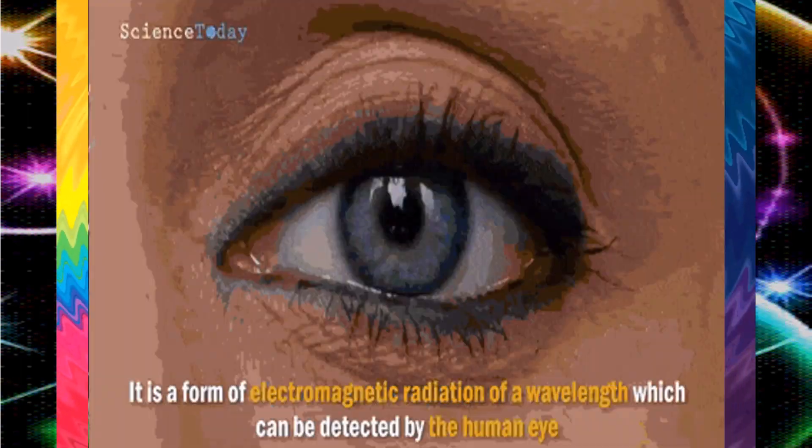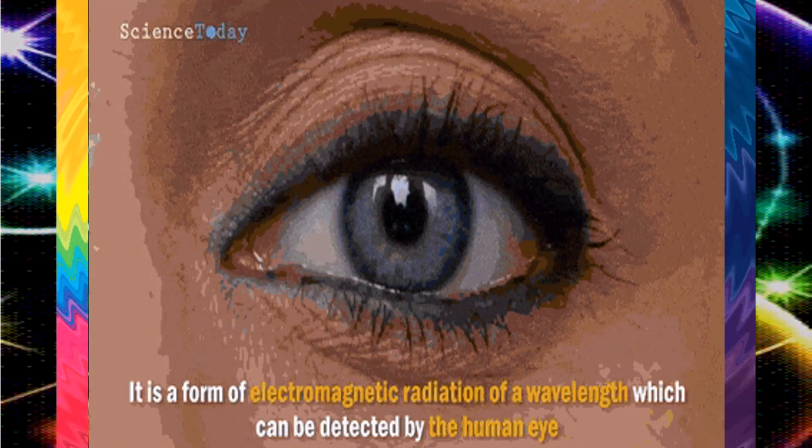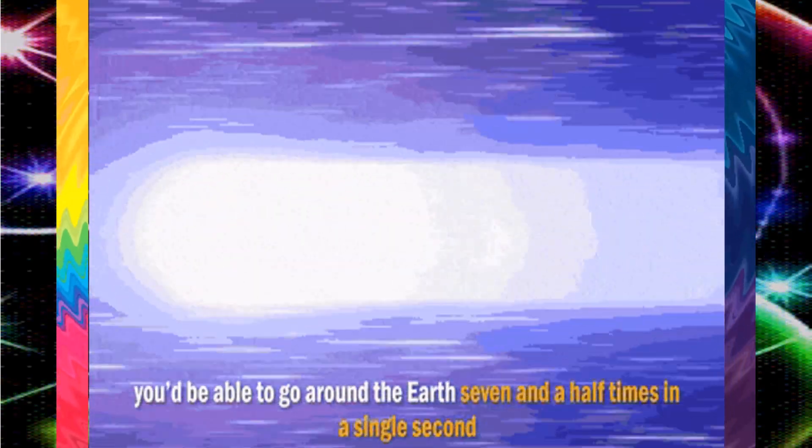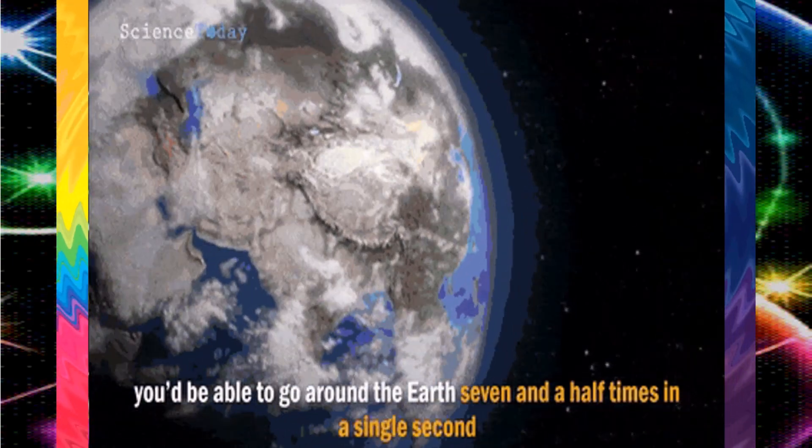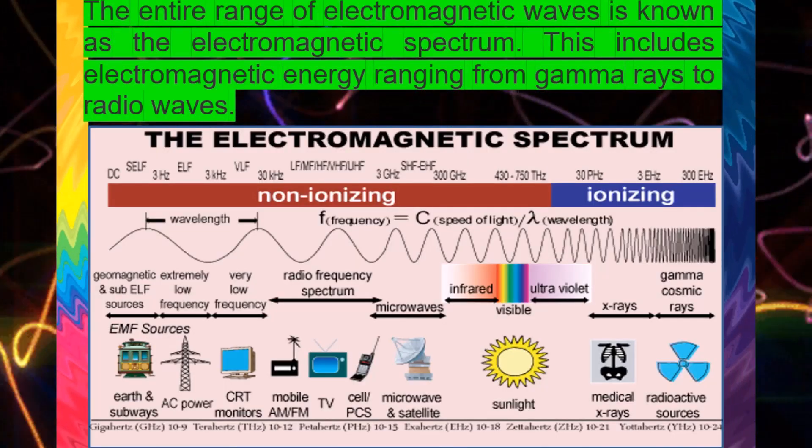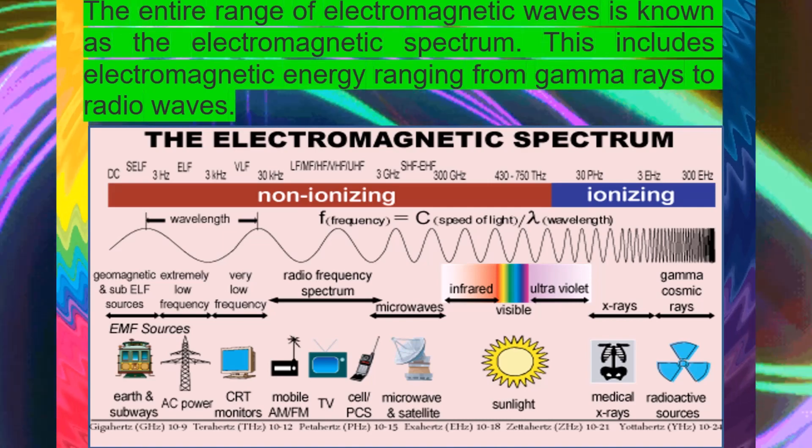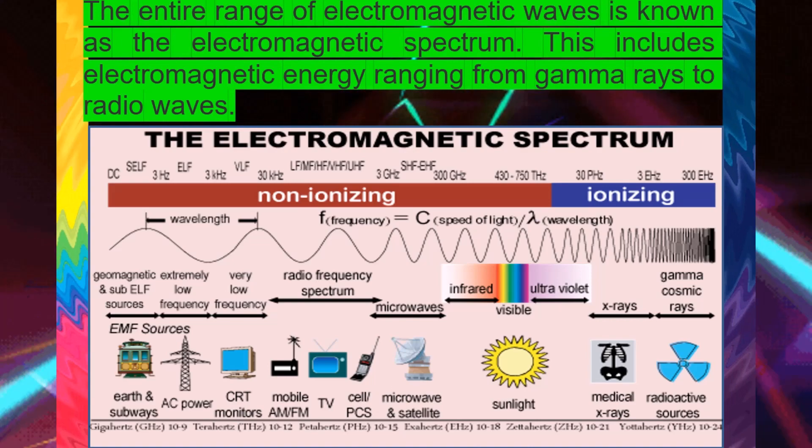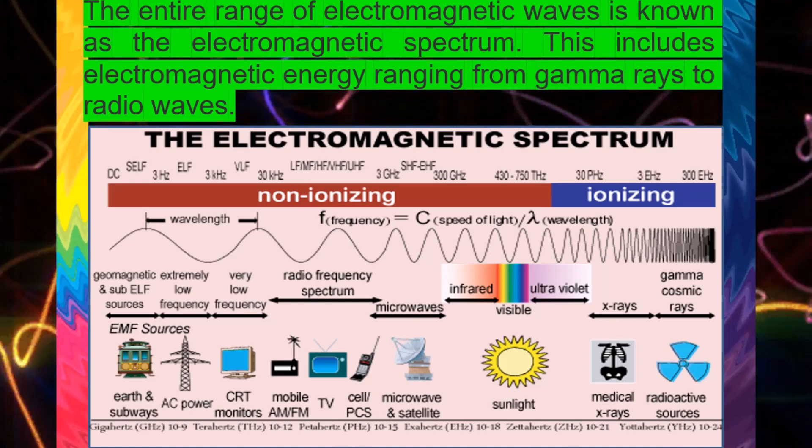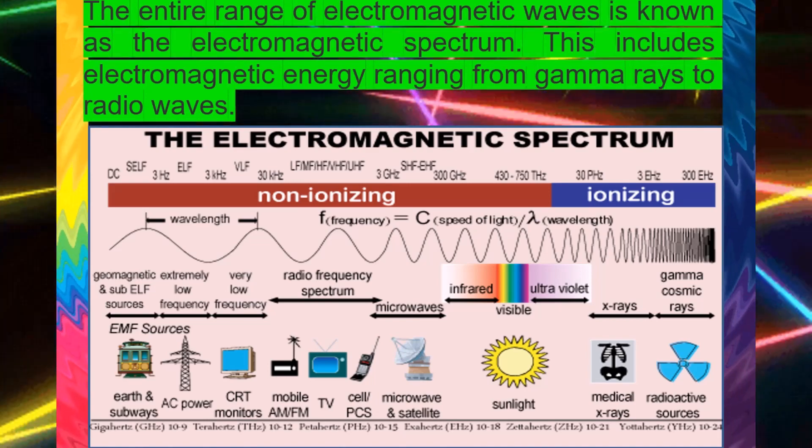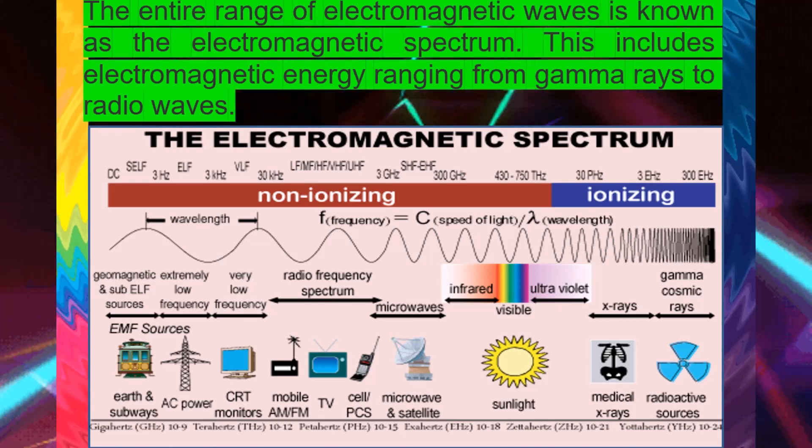We generally take light for granted, but it is a truly amazing and mysterious form of energy. Think about it, light travels to earth across millions of kilometers of empty space. When it reaches us, it interacts with matter in various ways to generate almost all the energy needed to support life, provide heat, and cause weather patterns. Light is a form of electromagnetic radiation, EMR. The term light usually refers to visible light, but this is not the only form of EMR.